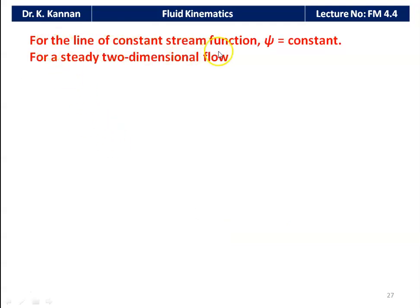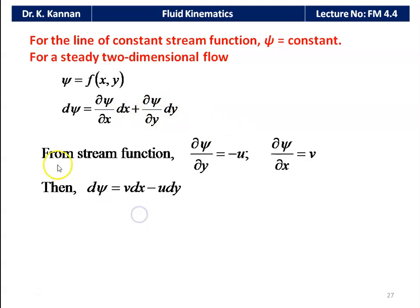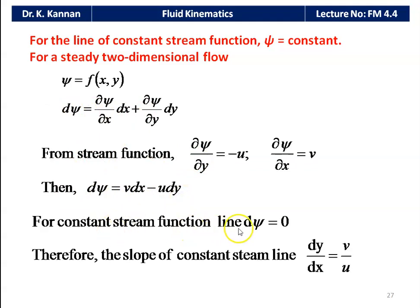The line of constant stream function where ψ = constant: since ψ is a function of x and y, dψ = (∂ψ/∂x)dx + (∂ψ/∂y)dy = v·dx − u·dy. For a constant stream function line, dψ = 0, giving the slope dy/dx = v/u. Earlier we found the slope of the equipotential line is dy/dx = −u/v, and here dy/dx = v/u.